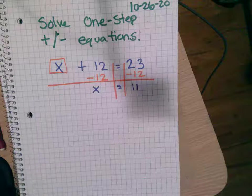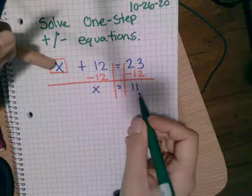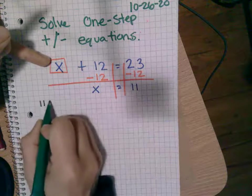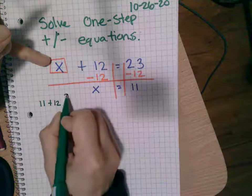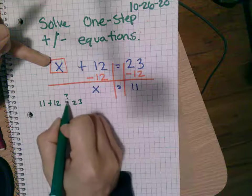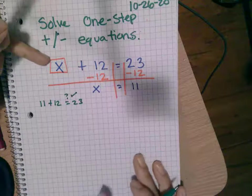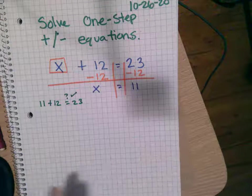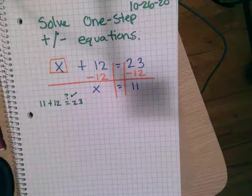Now, if I wanted to check, I could check. X is equal to 11, so I'm going to write 11. What's 11 plus 12? Does it equal 23? Yes, it does. It checks out. I did the math correctly. So this is called solving one step equation.